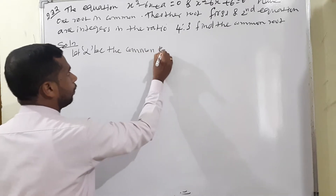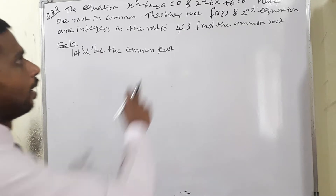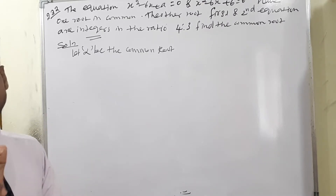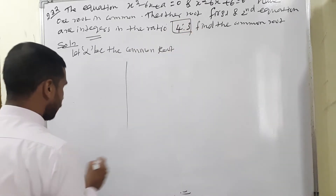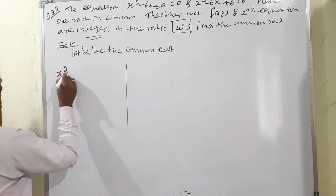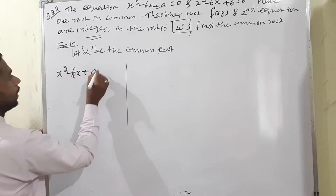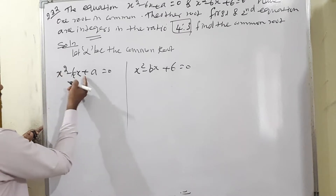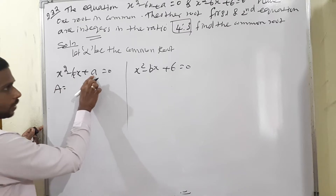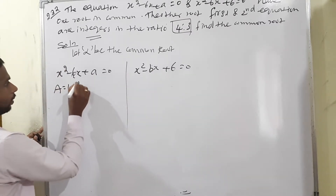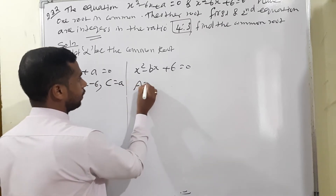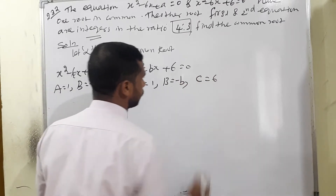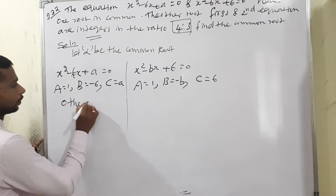The second condition is that the other roots of the first and second equation are integers. We rewrite: first equation x² - 6x + a = 0, second equation x² - bx + 6 = 0. From the first quadratic equation, A=1, B=-6, C=a. From the second, A=1, B=-b, C=6. The other root of the first equation is 4·beta and of the second is 3·beta.